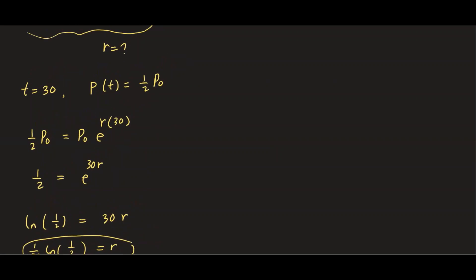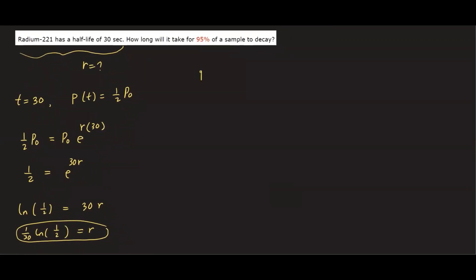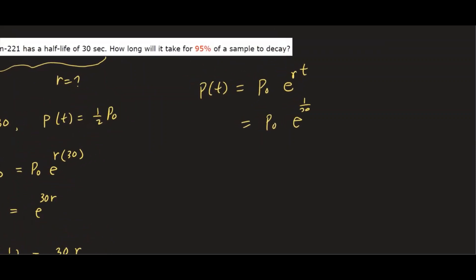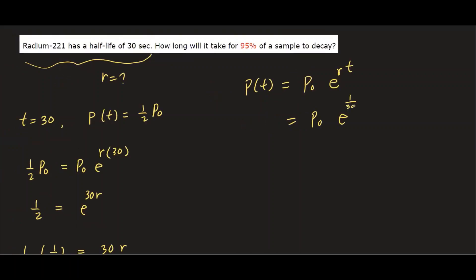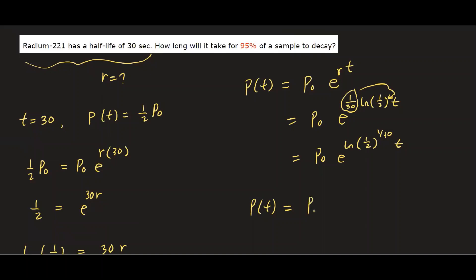Our model is P(T) = P₀·e^(rT). Plugging in r = (1/30)·ln(1/2): P(T) = P₀·e^((1/30)·ln(1/2)·T). Bringing 1/30 as an exponent: P₀·e^(ln((1/2)^(T/30))). Since e and ln cancel, our model becomes P(T) = P₀·(1/2)^(T/30).